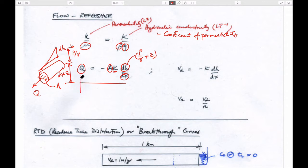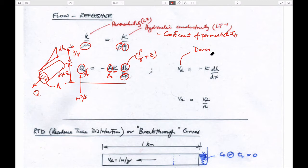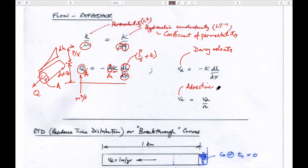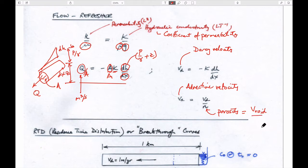Volumetric flow rate Q is in units of m³/s. If you divide both sides by the cross-sectional area of flow, you get the Darcy velocity — the bulk velocity of the fluid through the system, given by hydraulic conductivity multiplied by the gradient. The actual velocity at which fluid travels, which we call the advective velocity, is the Darcy velocity divided by porosity, which equals the volume of the void space divided by the total volume.